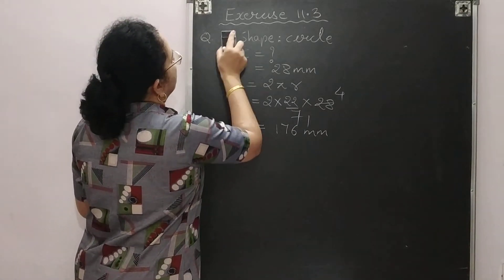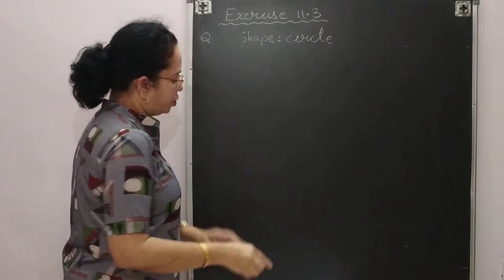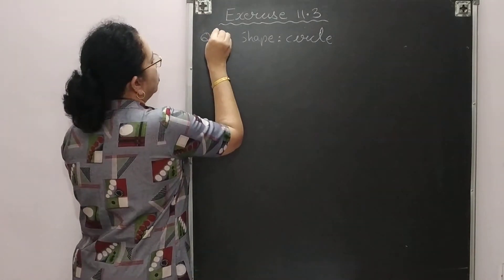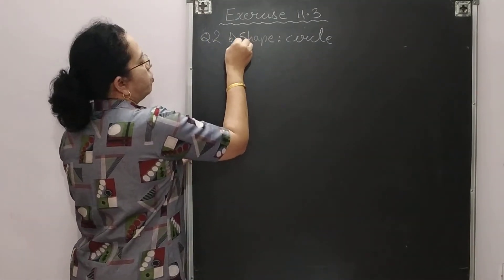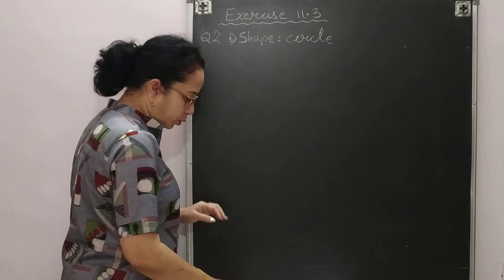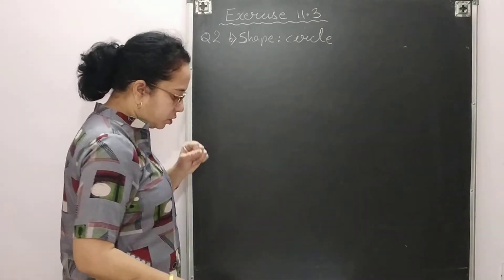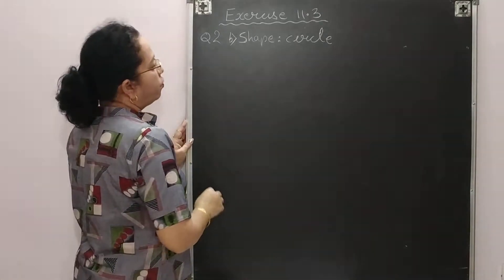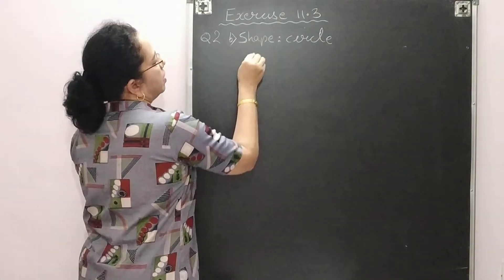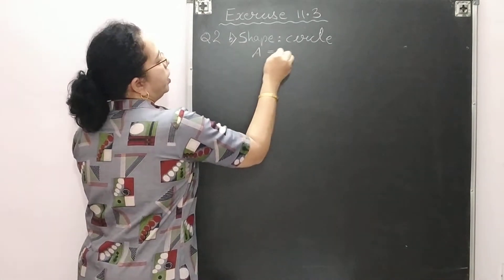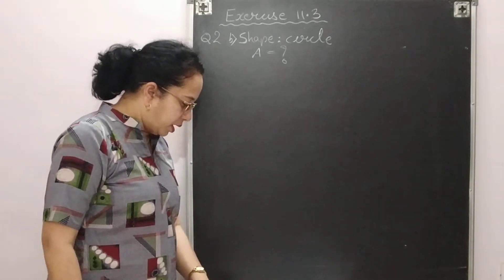Now we go to question number 2B: Find the area of the following circle. The given shape is a circle and we need to find the area, so area is the question mark.